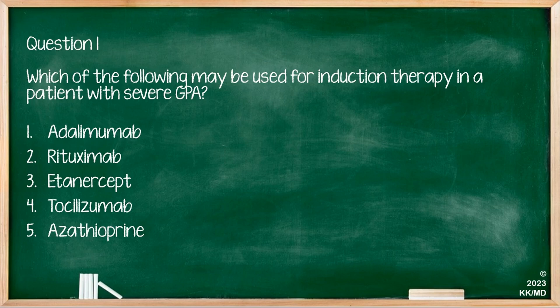Which of the following may be used for induction therapy in a patient with severe GPA? Options are adalimumab, rituximab, etanercept, tocilizumab, and azathioprine. Induction therapy uses steroids combined with either rituximab or cyclophosphamide. Therefore rituximab — option 2 — is the correct answer.